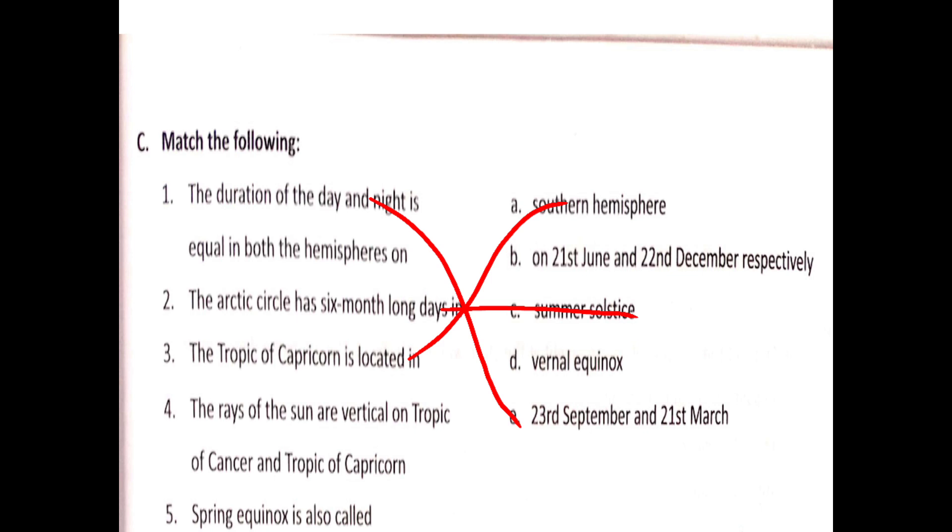Question 3: The rays of the sun are vertical on Tropic of Cancer and Tropic of Capricorn on 21st June and 22nd December respectively. Spring Equinox is also called Vernal Equinox.